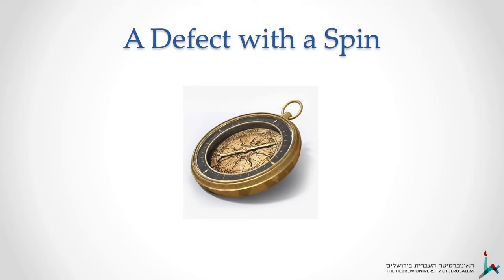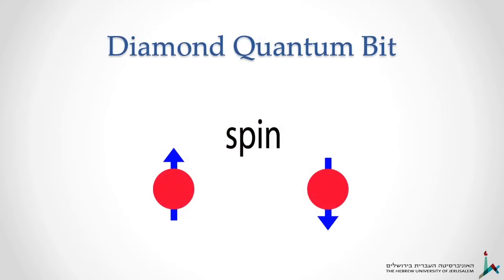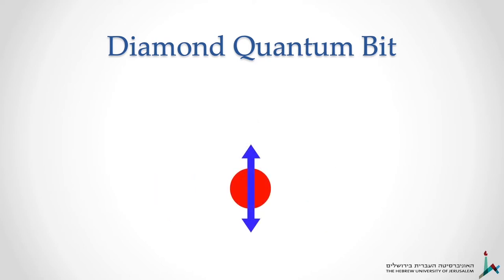Our NV defect is like a tiny compass needle sitting inside the diamond, but it's not a regular compass needle—it's quantum. What do I mean by the fact that it's a quantum compass needle? Well, you already know, right? A quantum system can be in two places or in two states at the same time. So if I think about this spin of my NV defect, it could be pointing up or it could be pointing down, but it doesn't have to choose because it's quantum. So actually my NV defect can be pointing both up and down at the same time.